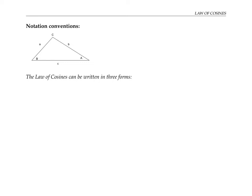When labeling a triangle, the convention is to use lowercase letters for the side lengths and uppercase letters for the angles, and to put angle A opposite side a, and so on. We wrote c squared equals a squared plus b squared minus 2ab cosine C, but it doesn't matter which side we call a, b, or c — all that matters is that this angle is opposite to this side and between these two sides. So we could have just as easily written a squared equals b squared plus c squared minus 2bc cosine A, or b squared equals a squared plus c squared minus 2ac cosine B. We can use whichever of these three forms is most convenient.